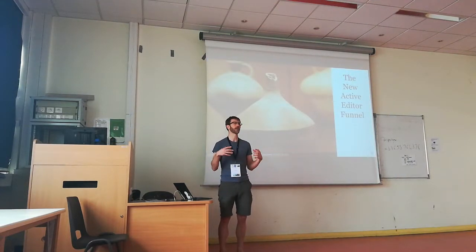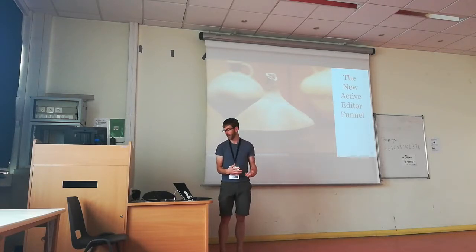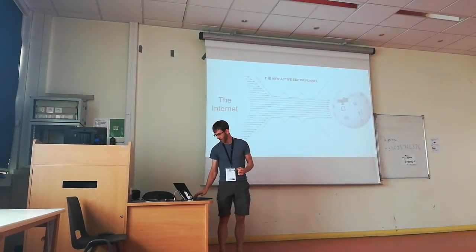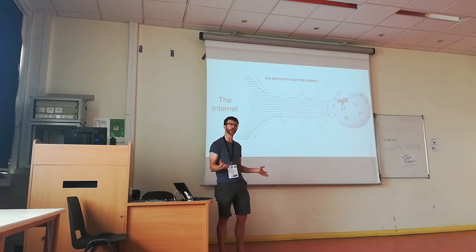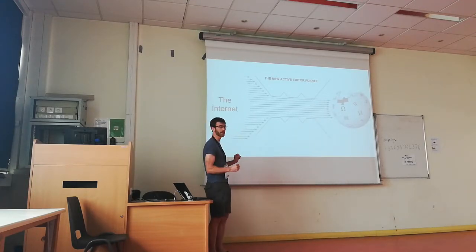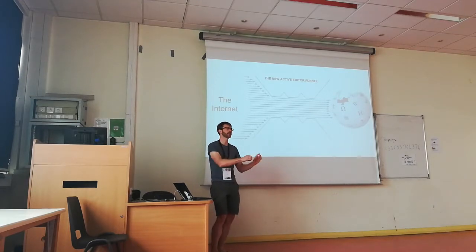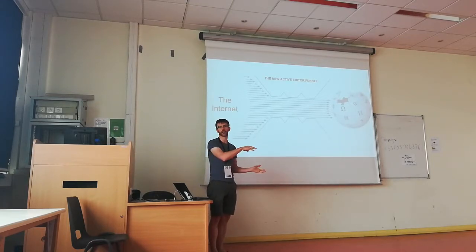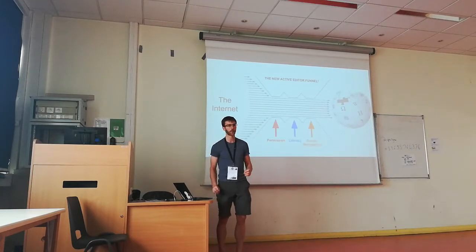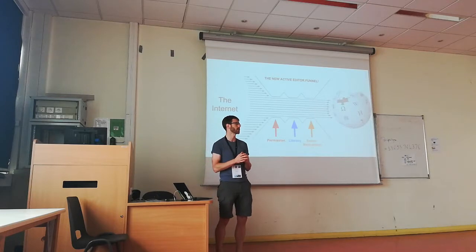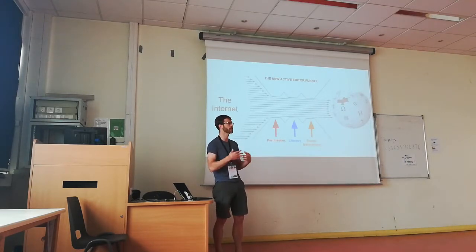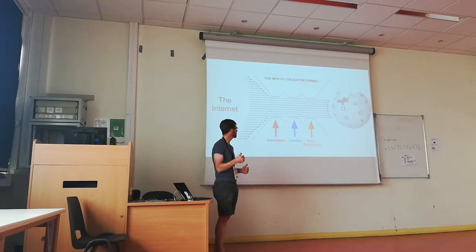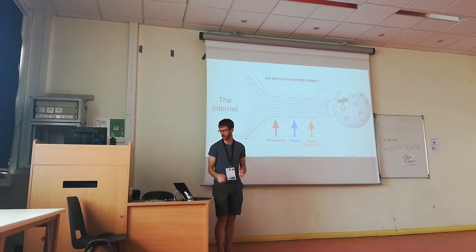To talk about barriers to editing Wikipedia, I want to introduce what I call the new active editor funnel. The internet is trying to get to Wikipedia, trying to see if it can contribute, and they have to pass a gauntlet of difficulties along the way. I like to think about this in three chunks — this is just a lens, there aren't really only three types of barriers, but it's useful. The three areas are: permission, literacy, and social motivation.